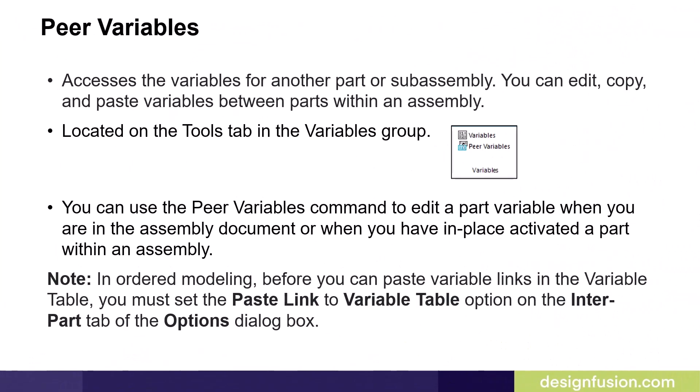The Peer Variables command allows users to access variables for a part or sub-assembly from within an assembly. Located on the Tools tab in the Variable group, the tool allows you to edit or copy and paste variables between parts within an assembly.